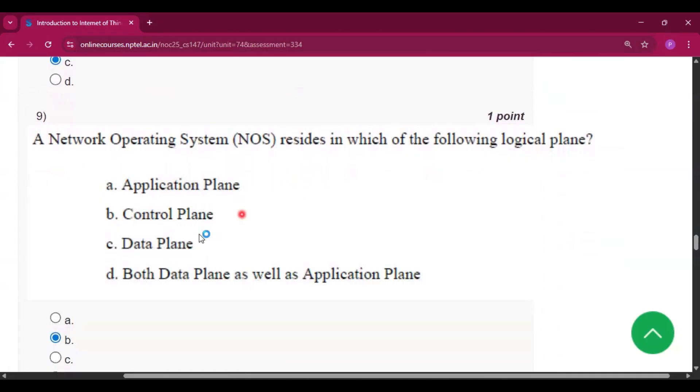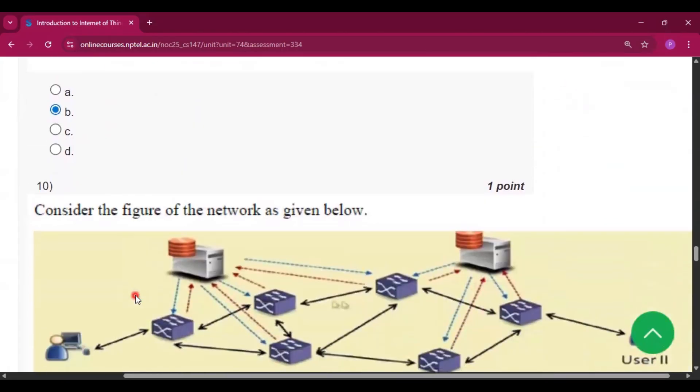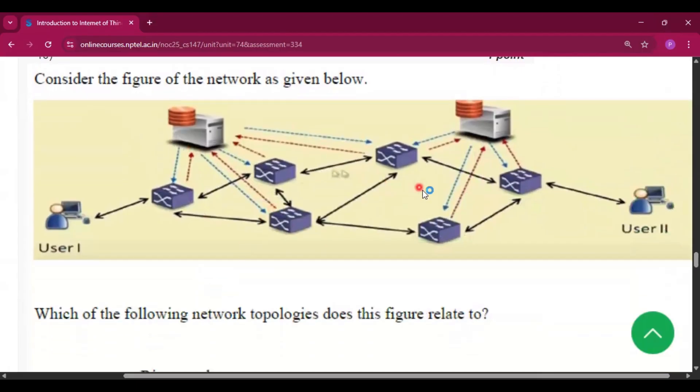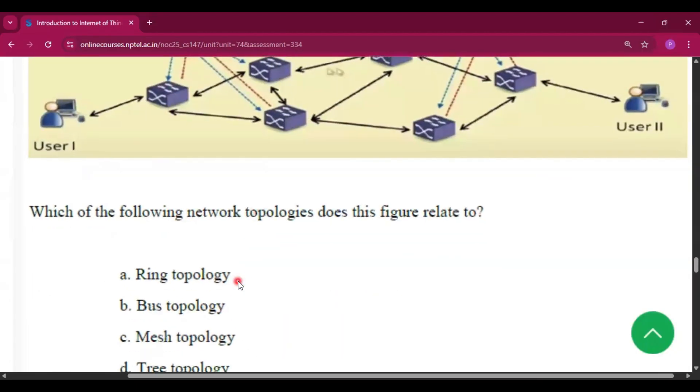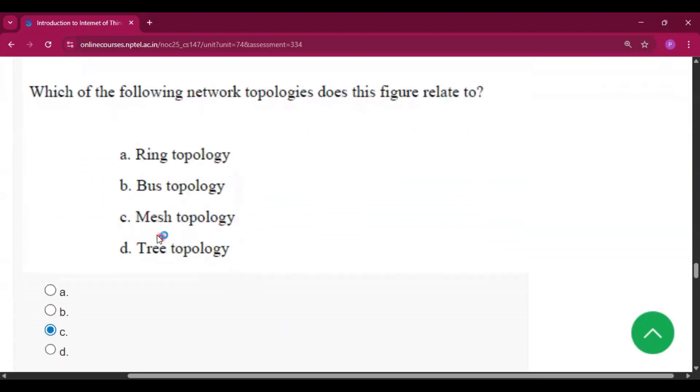Now question number nine, the answer will be option B, that is control plane. Now question number 10, the image is given. Which of the following network topologies does this figure relate to? So the answer will be mesh topology, that is option C.